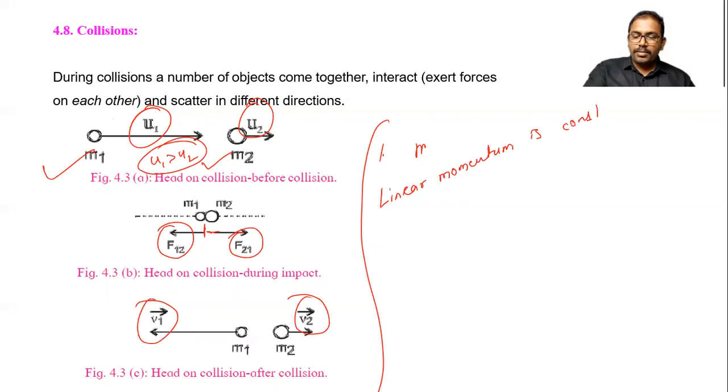Momentum is constant means momentum is conserved. So momentum before collision and momentum after collision is equal. So I can write momentum before collision is equal to momentum after collision.